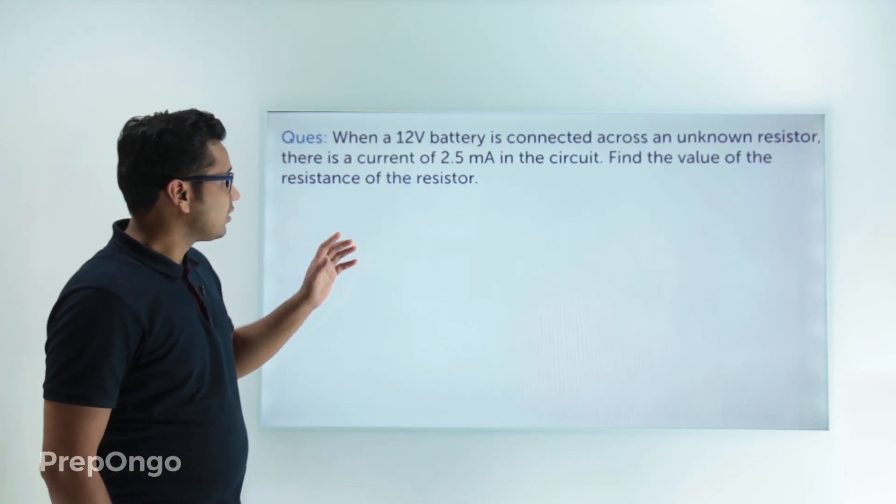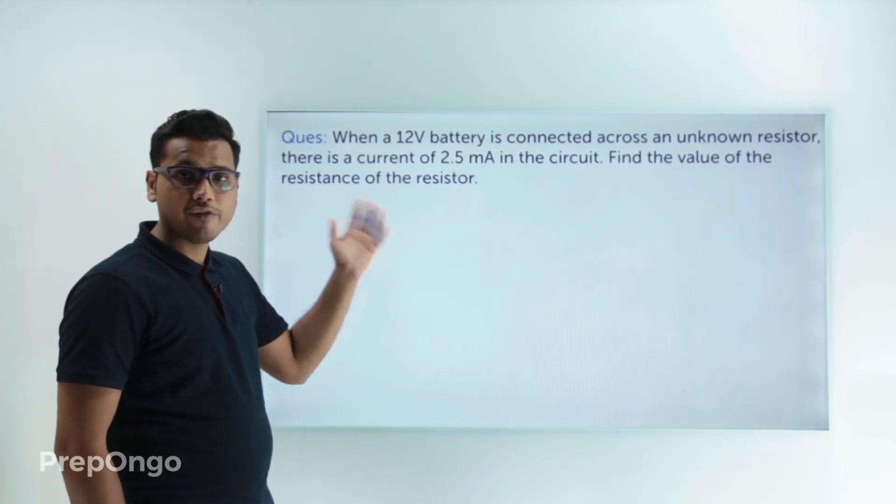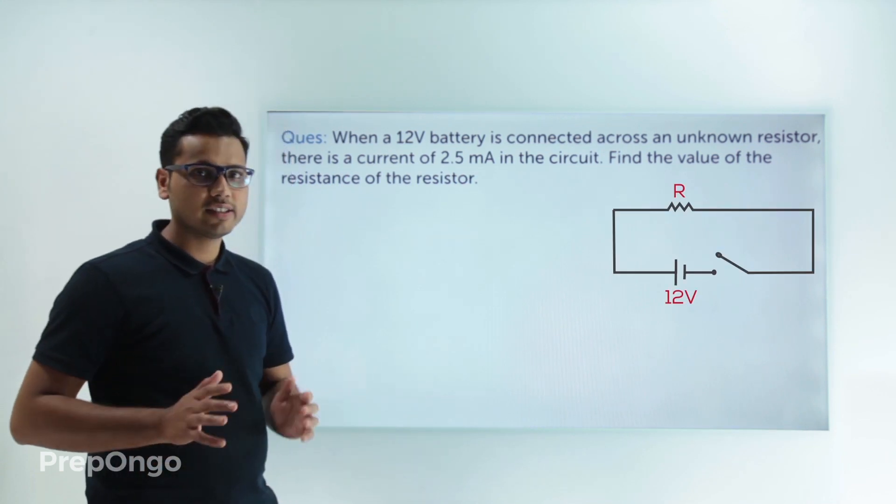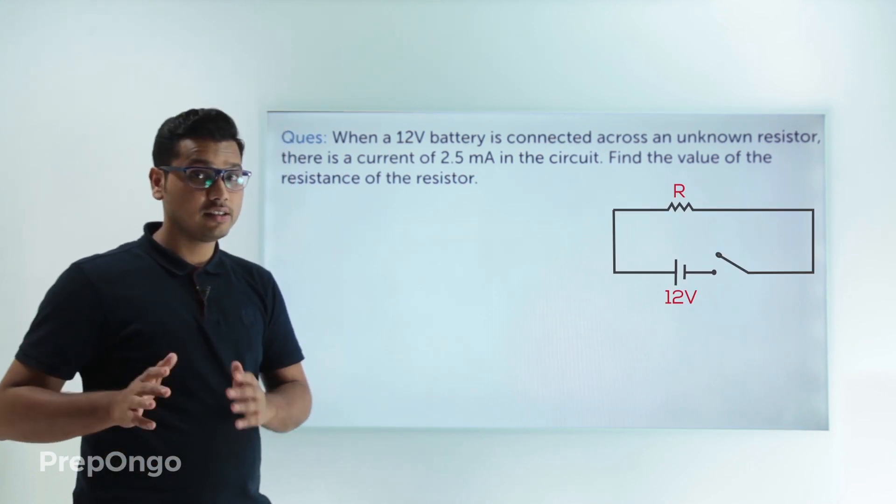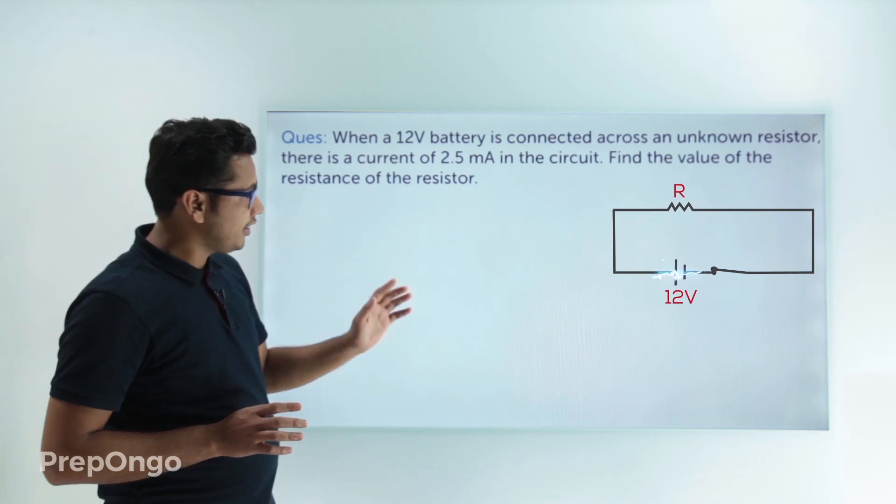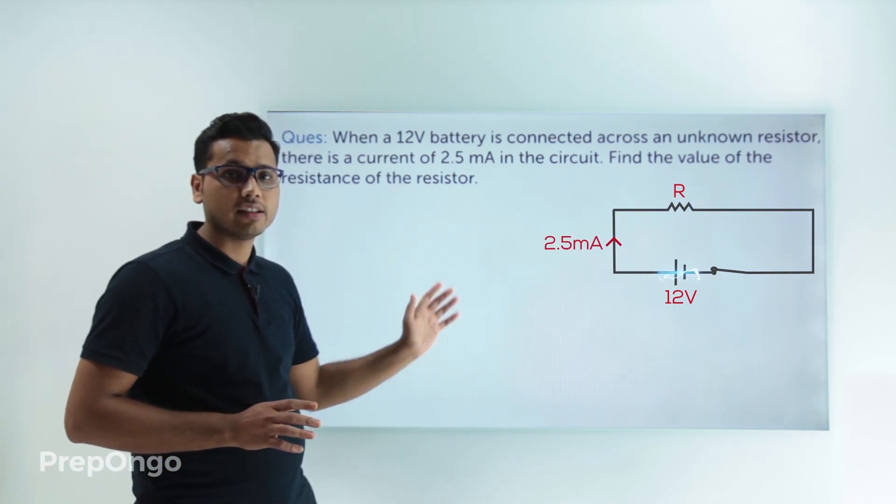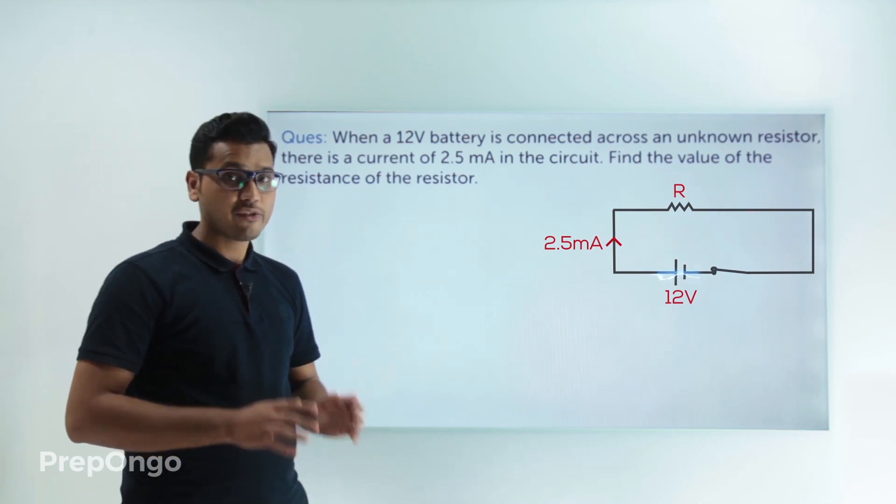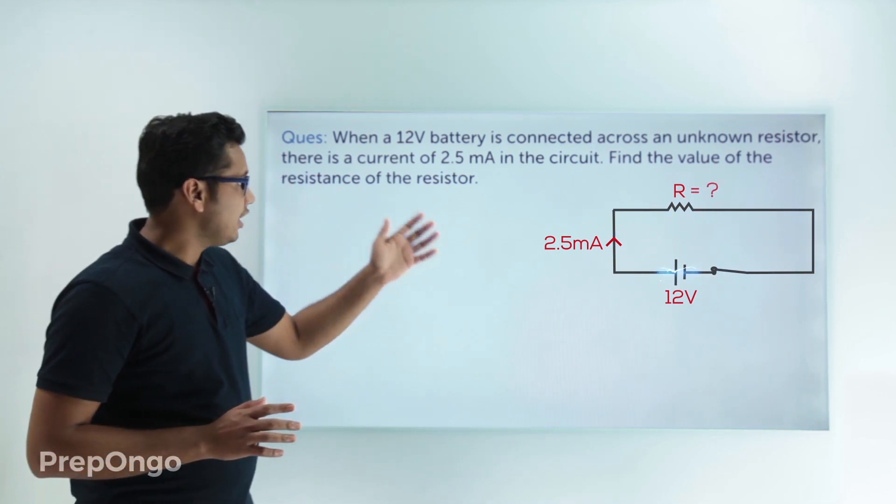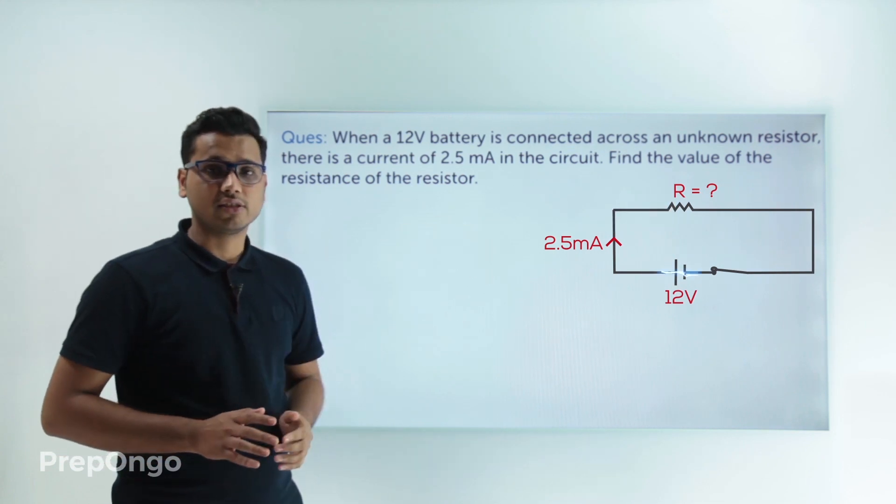The example is that we have connected a 12 volt battery to an unknown resistor, and then a current of 2.5 milliampere flows in this whole circuit. We have to find out the value of the resistance of this resistor.